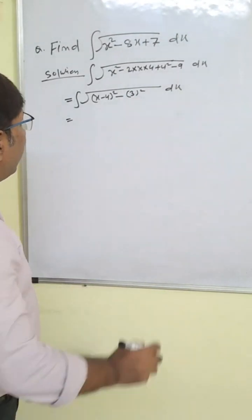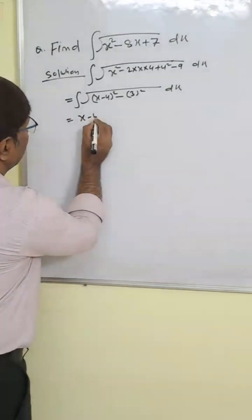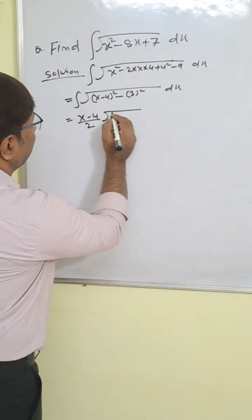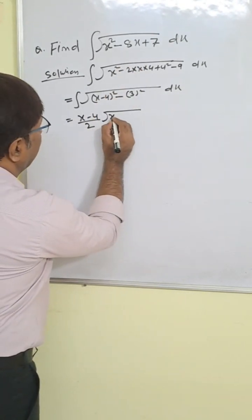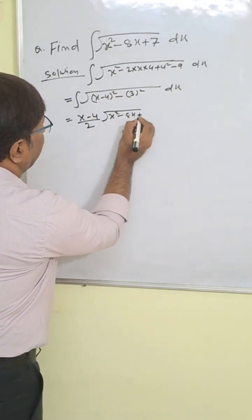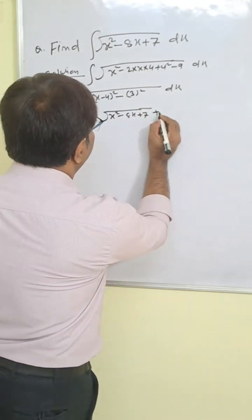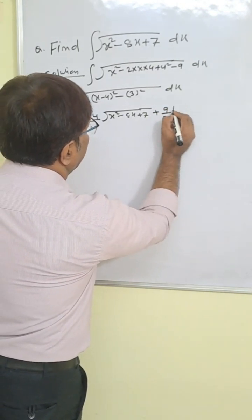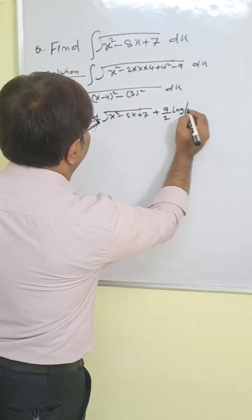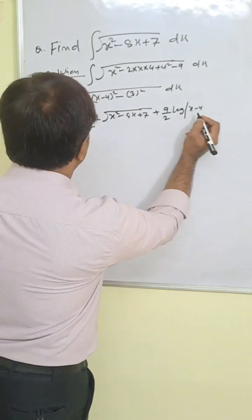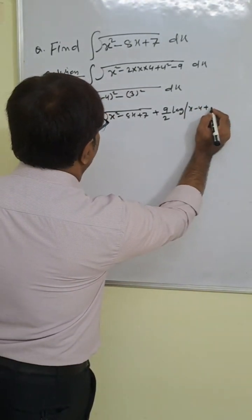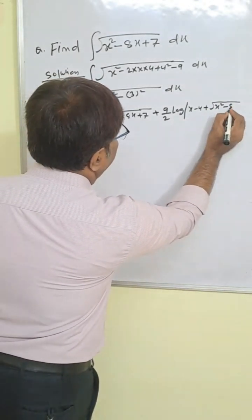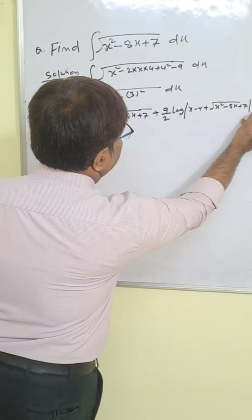Now this is integration of root under x square minus a square. So our formula is: x by 2 times root under x square minus a square. Here x is x minus 4, so we write x minus 4 by 2, times root under x square minus 8x plus 7. And then plus a square by 2, where a square is 9, so 9 by 2 times log of (x minus 4) plus root under x square minus 8x plus 7, plus C. This is our correct answer.